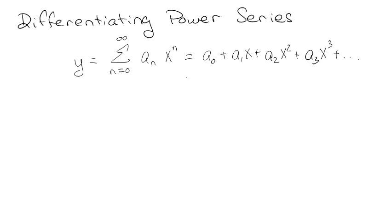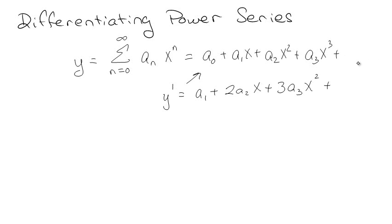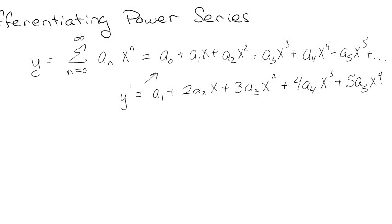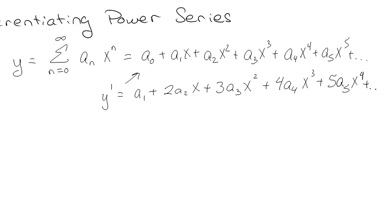Now, if I normally wanted to differentiate something, I could just look at it and differentiate this right here. That first term goes to 0, and this is going to be a1 plus 2a2x plus 3a3x squared, plus 4a4x cubed, plus 5a5x to the fourth, et cetera. So I can differentiate along those lines.